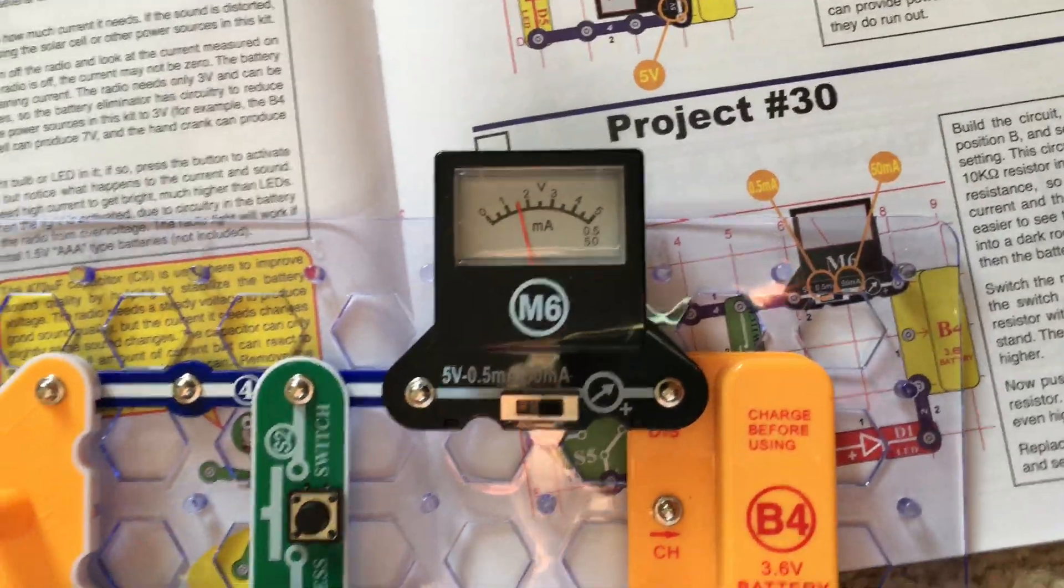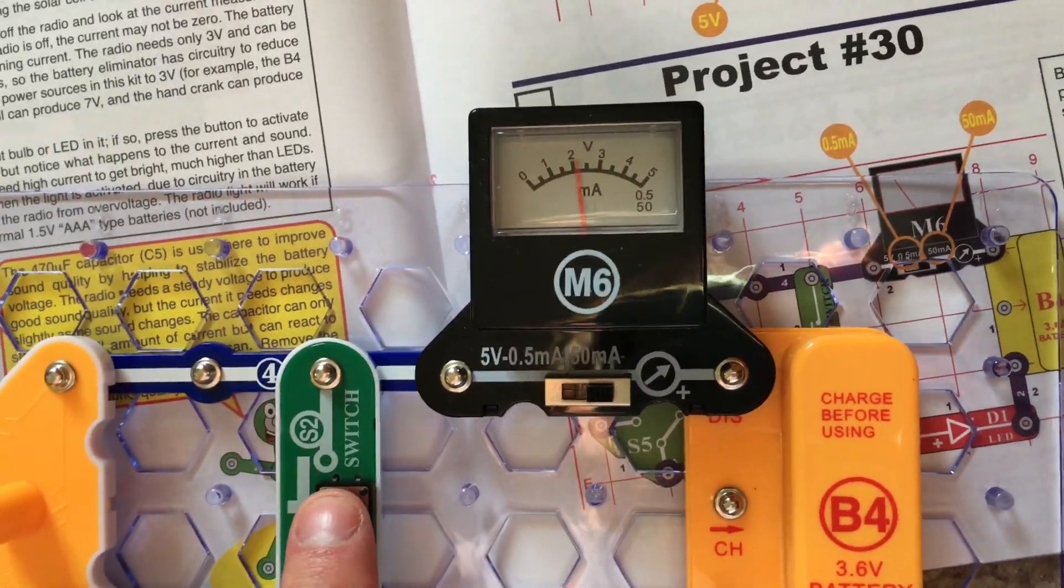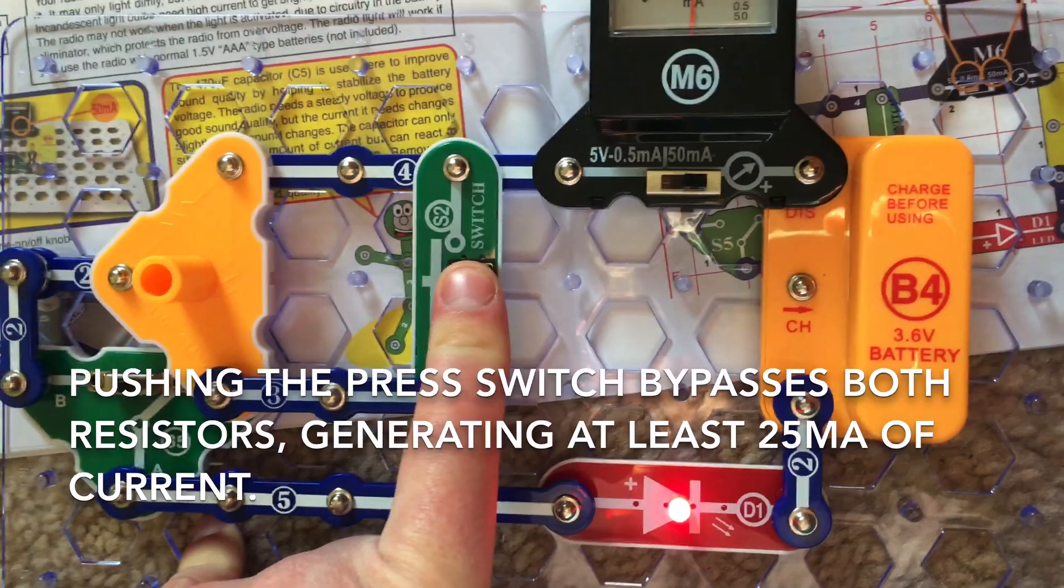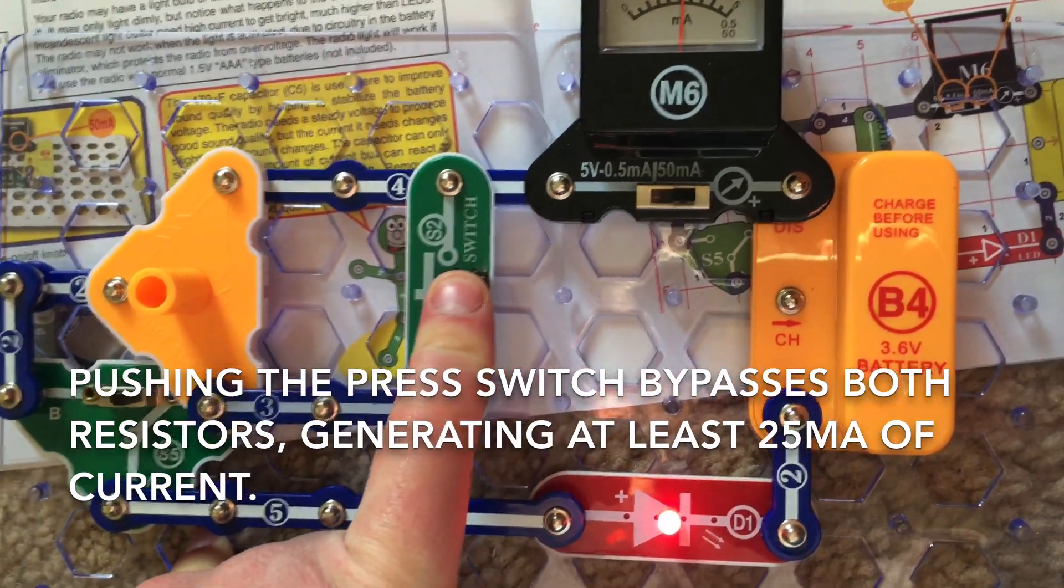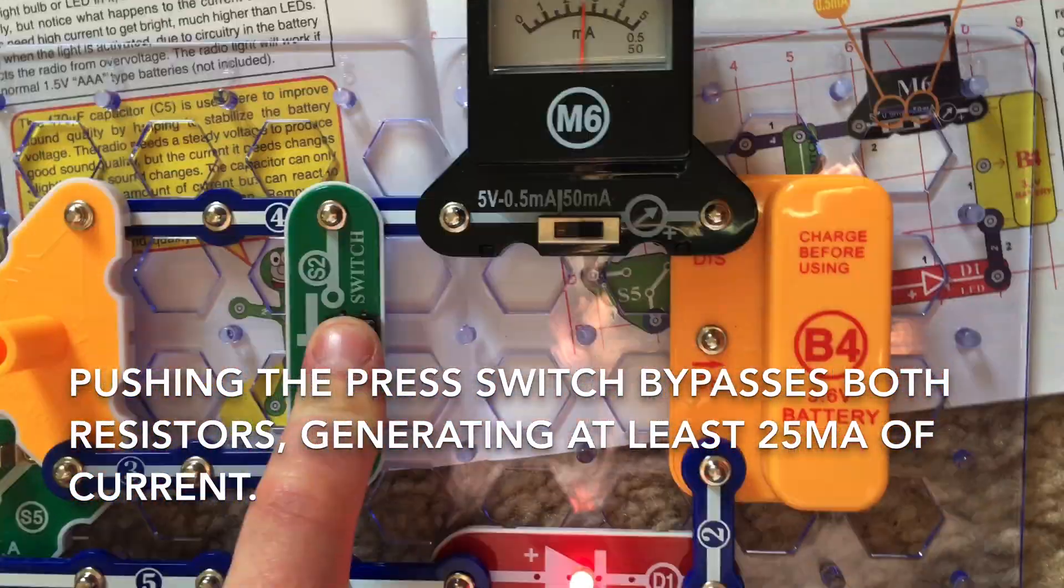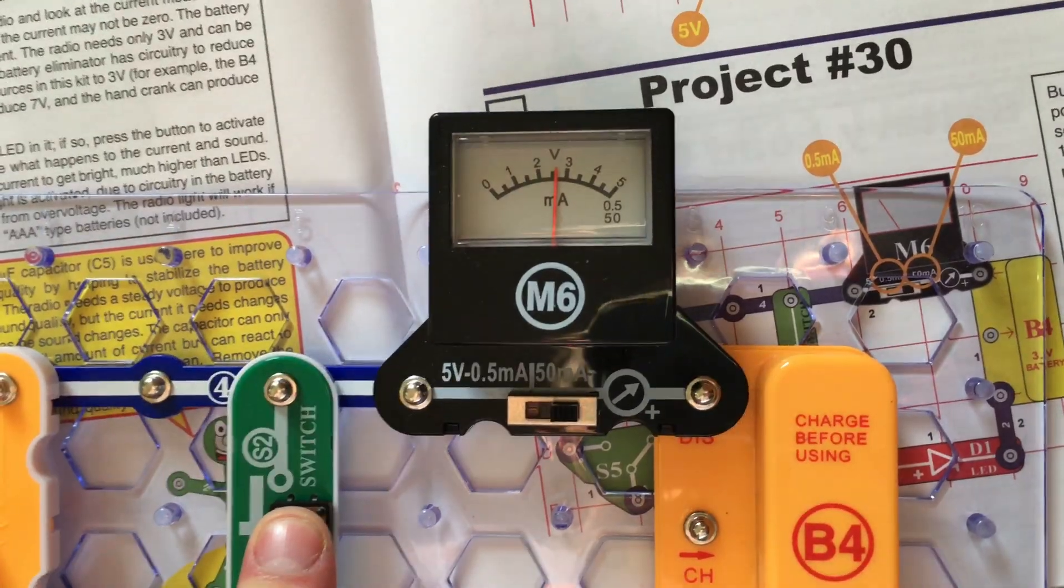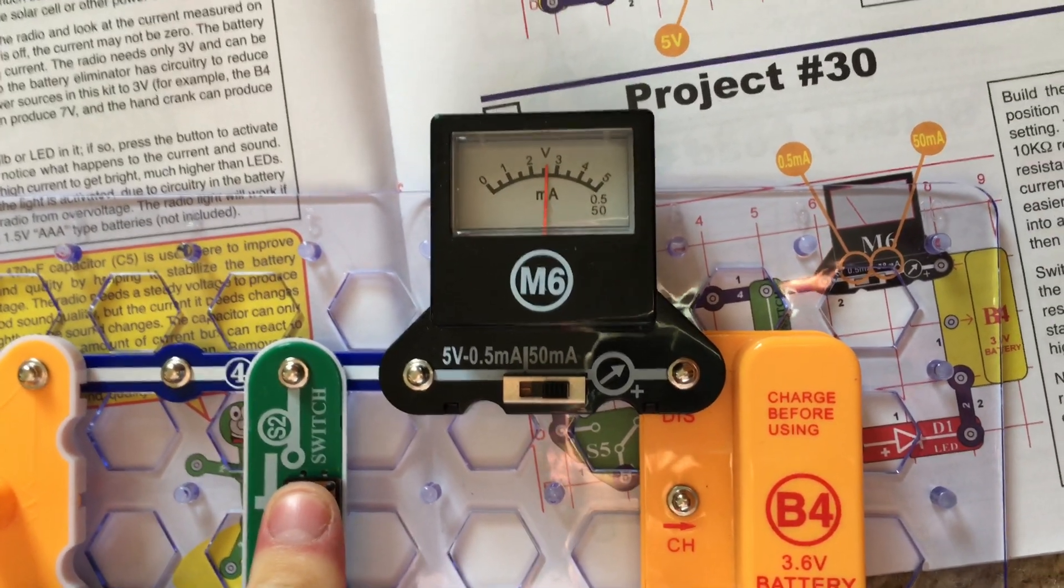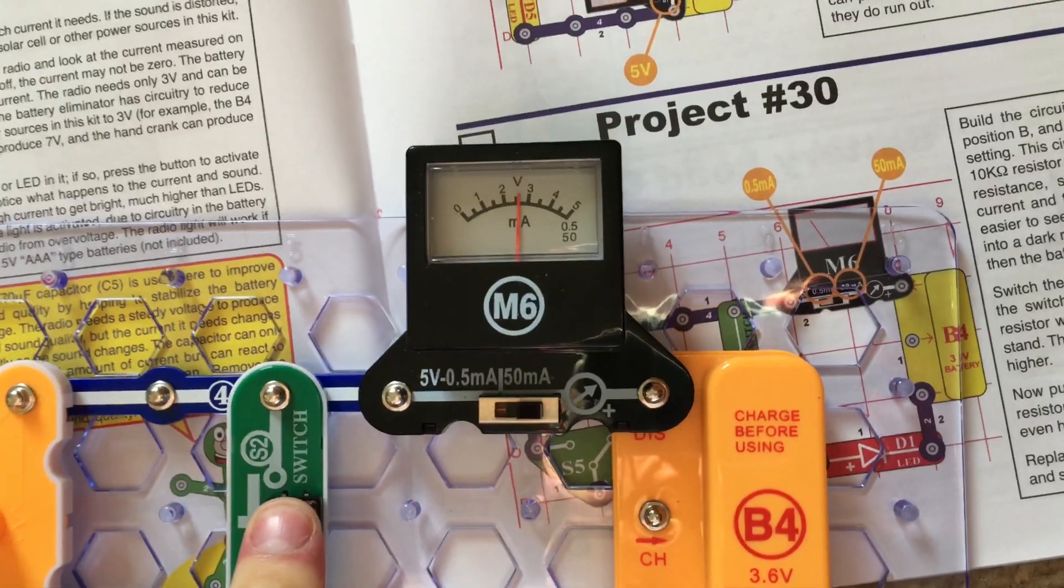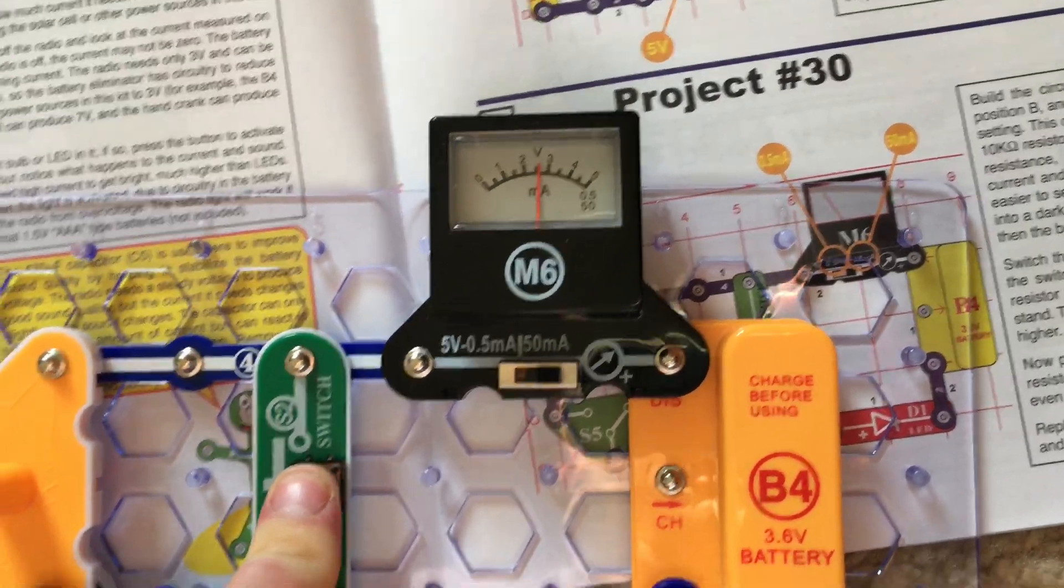If I press the press switch, both resistors are bypassed and the red LED gets brighter. Now there's more than 25 milliamps of current flowing through the meter.